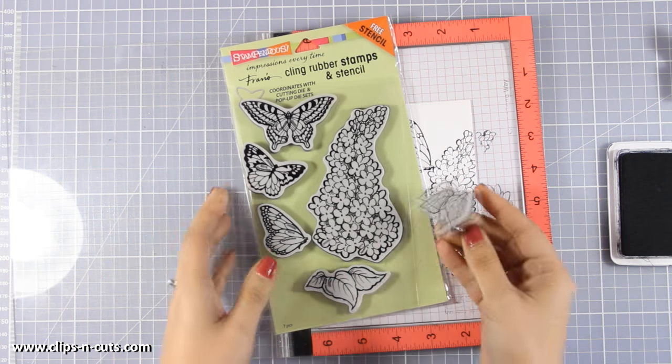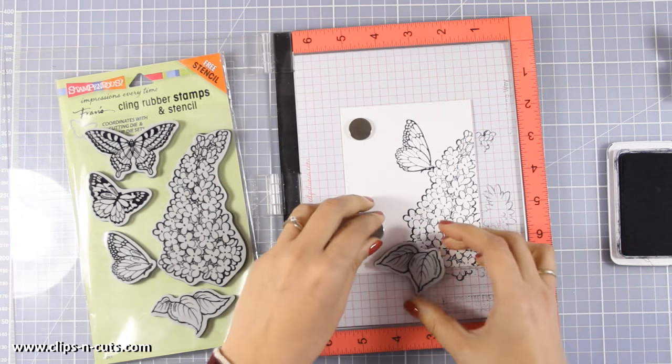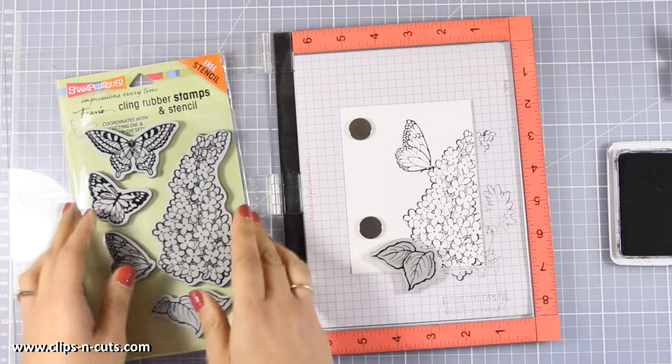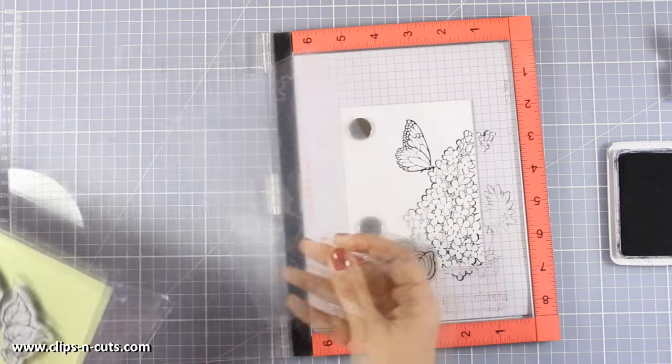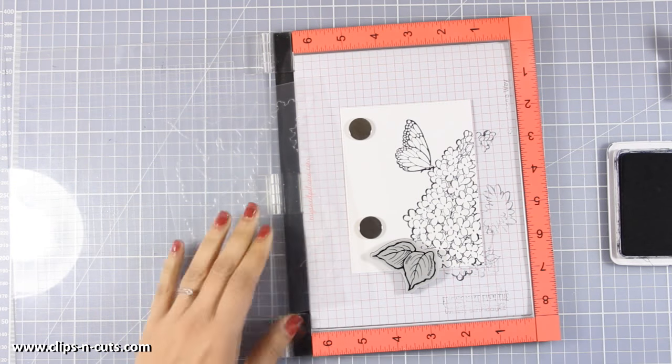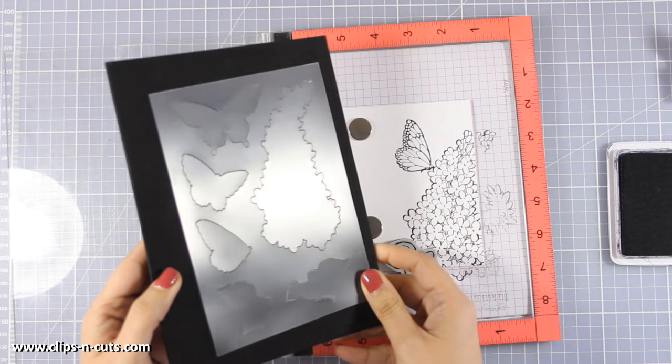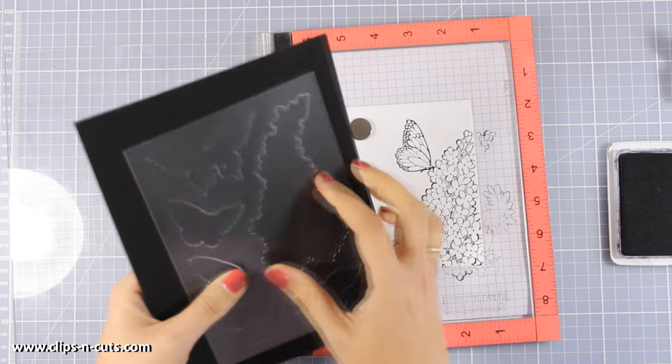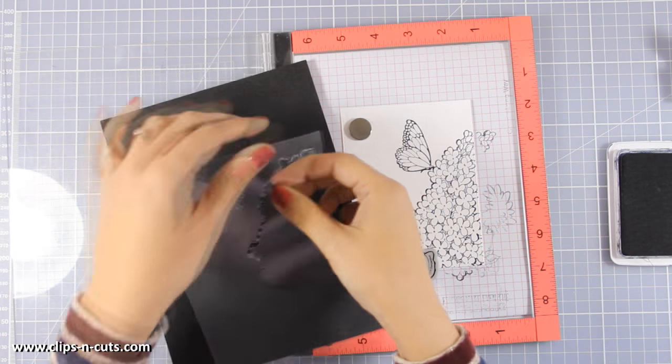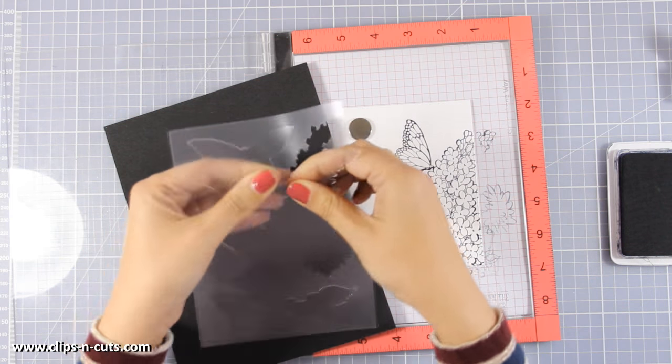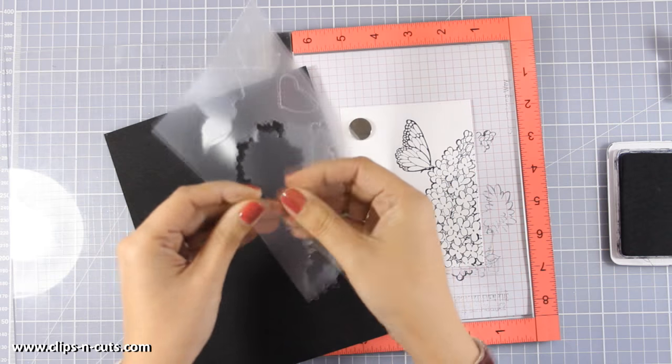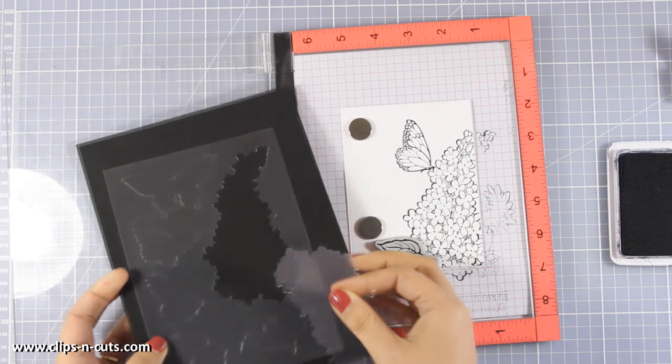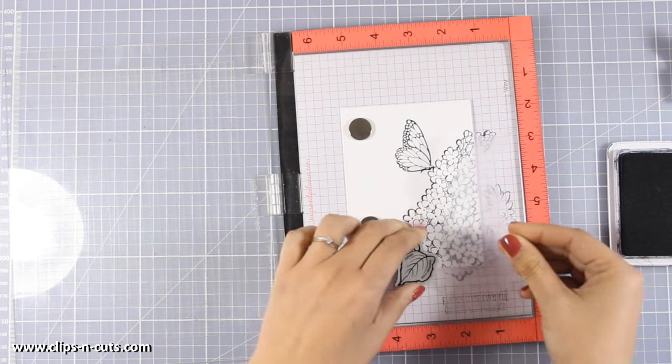So now I am also going to stamp the leaves at the very bottom and because I want these leaves to appear as if they are at the back of my lilac I need to do some masking. And what is great about this Stampendous stamp set is that they give you everything you need to do the masking. So you get this stencil that has all the masks for every image included in the stamp set but at the same time you can use the negative space as well.